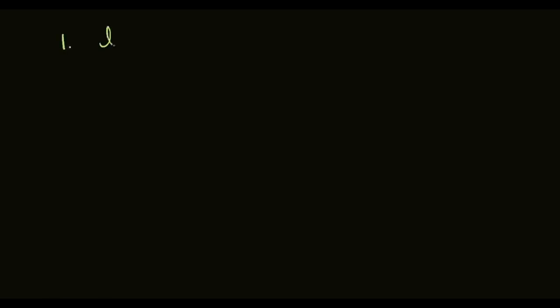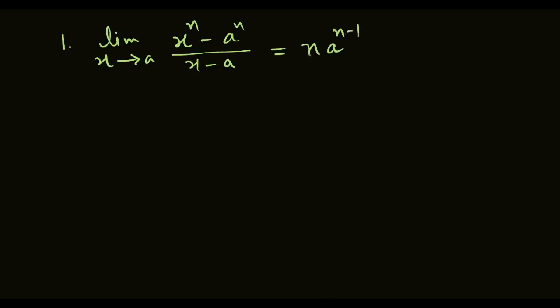Today we are going to discuss some formulas of limit. First formula is: limit x tends to a, x raised to power n minus a raised to power n, upon x minus a. Solving this gives n times a raised to power n minus 1.